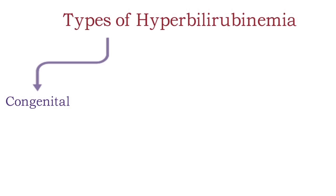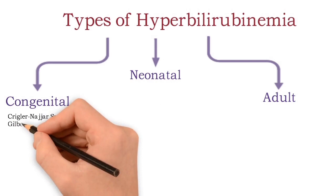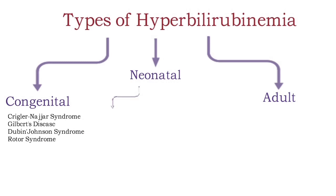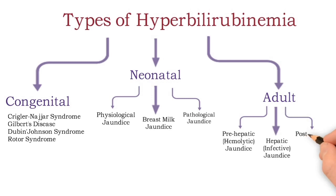Hyperbilirubinemia is of three types: first, congenital hyperbilirubinemia; second, neonatal hyperbilirubinemia; and third, adult type of hyperbilirubinemia. In adults, the types are pre-hepatic or hemolytic jaundice, hepatic or infective jaundice, and post-hepatic or obstructive jaundice.